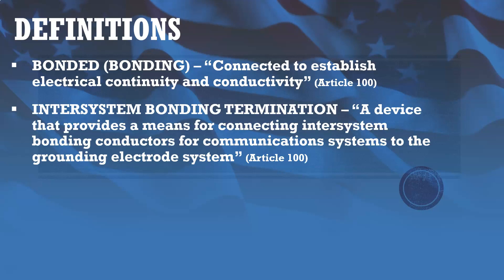Inter-system bonding termination is a device that provides a means for connecting inter-system bonding conductors for communication systems to the grounding electrode system. It's a big, fancy-sounding term, but essentially an inter-system bonding termination is a device that we install on the grounding electrode system so that communication systems can bond to the grounding electrode system.